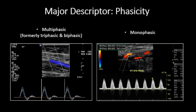Phasicity is another key flow signal characteristic. Multiphasic is now largely accepted and in use, having replaced triphasic and biphasic terminology. However, it's still acceptable and correct to use triphasic as a waveform descriptor. Multiphasic waveforms cross the baseline, which represents zero flow. Forward and reverse velocities will be present in multiphasic waveforms.